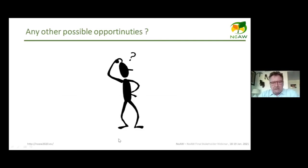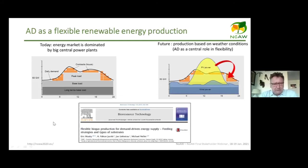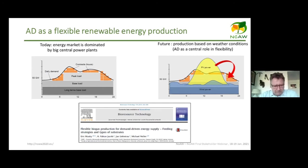Besides these approaches, anaerobic digestion can make energy production more flexible. It is very difficult to store electricity, but biogas can be stored and used as a demand-driven energy source. By varying feeding strategies and substrate types, you can smooth energy production peaks and achieve more stable electricity output.